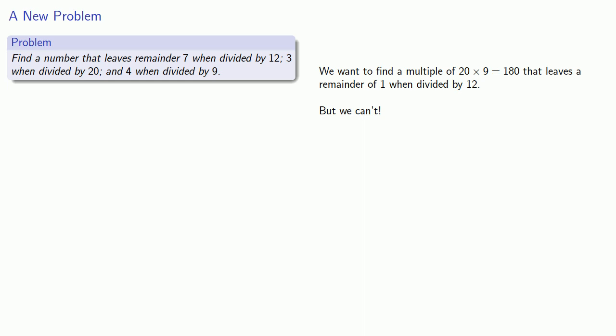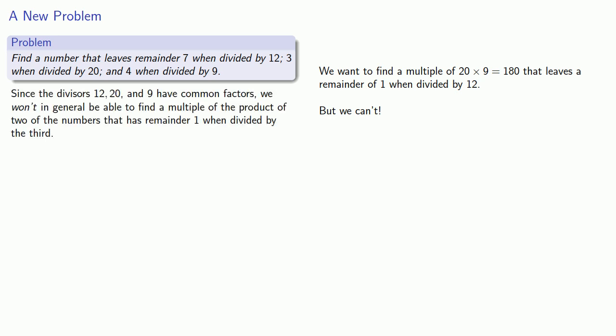The reason this happened is our divisors. Since the divisors 12, 20, and 9 have common factors, we won't in general be able to find a multiple of the product of two of the numbers that has remainder 1 when divided by the third.